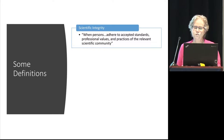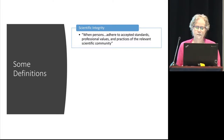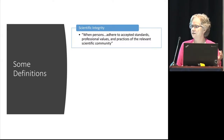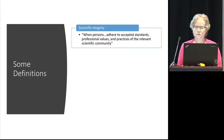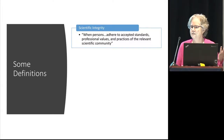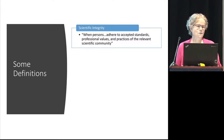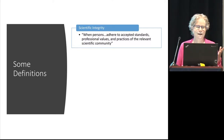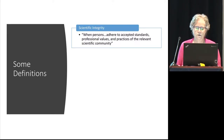We talk about research misconduct or research breaches — this is where we're talking about fabrication, making up data, falsification, or plagiarizing in either proposing, performing, reviewing, or reporting research results. Within this context, it's not an honest error — if somebody transposed a data point, or if it's a difference of opinion when two people view exactly the same data and come up with different interpretations. That doesn't fall under misconduct.